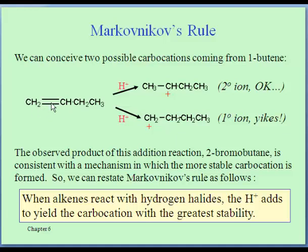One of the two bonds in the double bond forms a bond to hydrogen, and so we can imagine two possible intermediates — two different carbocations. The first one would be expected to form in preference to the second one because it is secondary, and we learned that secondary carbocations are more stable than primary ones.